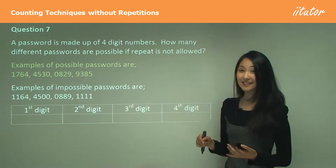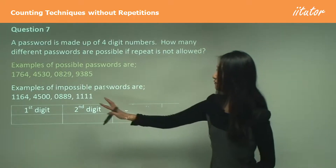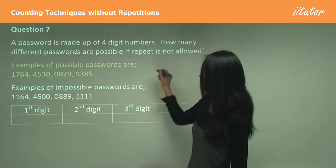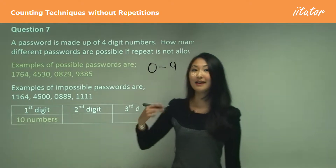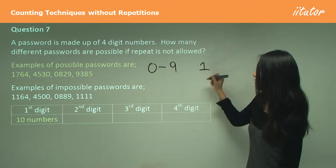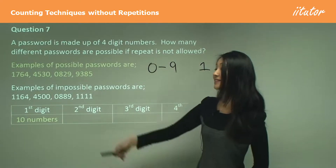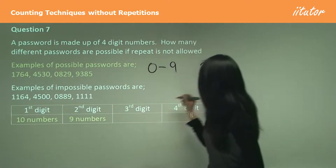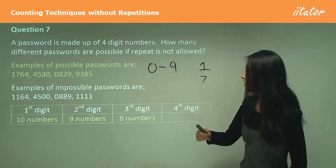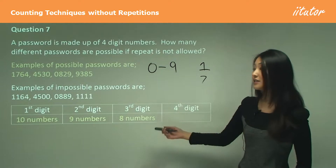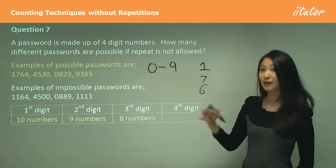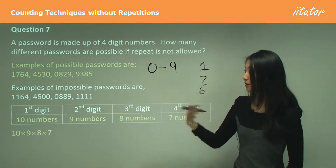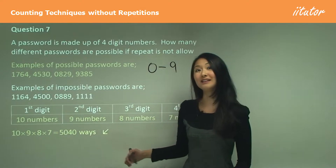Let's consider it diagrammatically. We have our four digit positions. For the first digit, numbers zero to nine are available, so that's ten different numbers. Now one has been used, so only nine numbers are left for the second digit. One more is used, leaving eight for the third digit. Then seven for the fourth digit. Because it's 'and' between all of them, we multiply: 10 × 9 × 8 × 7 = 5040 different ways.